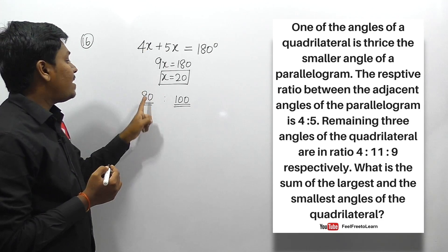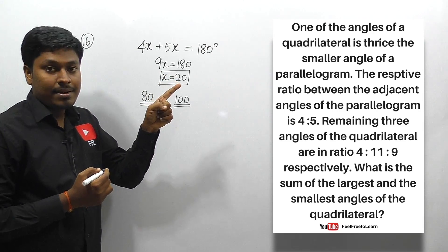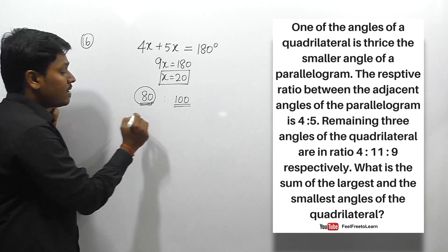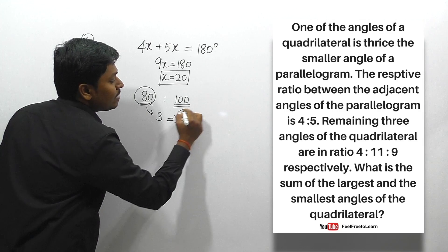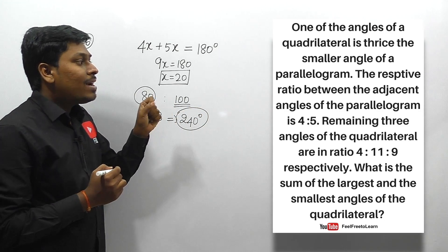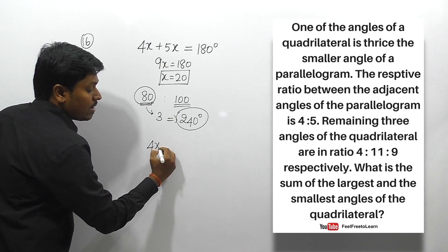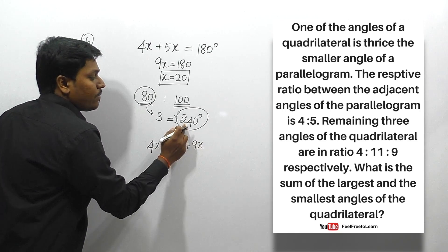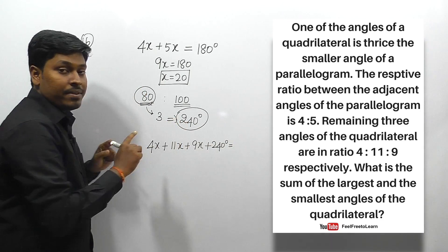So 100 degrees and 80 degrees are the angles of the parallelogram. The smallest angle of the parallelogram is 80 degrees. One angle of the quadrilateral is thrice this, so 80 × 3 = 240 degrees. The remaining three angles of the quadrilateral are in ratio 4:11:9, giving 4x, 11x, and 9x, with the fourth angle being 240 degrees.